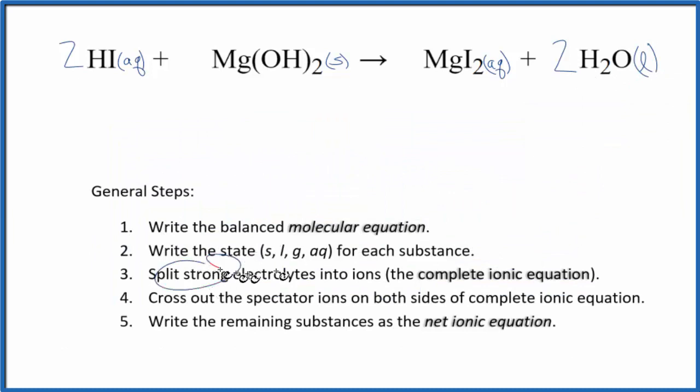Next we split the strong electrolytes into their ions. That's the complete ionic equation. Anything that says aqueous here is a strong electrolyte. So we'll have hydrogen—group 1 has a 1+ charge—and iodide, 1-. So I have two hydrogen ions, plus two iodide ions. Because magnesium hydroxide is a solid, we don't split that apart in net ionic equations. It's just Mg(OH)₂, so it stays the same.